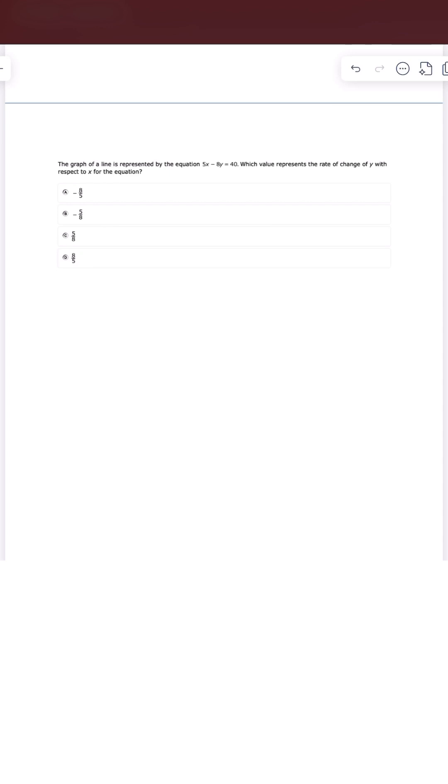This is number seven from the 2024 Algebra 1 EOC. The graph of a line is represented by the equation 5x minus 8y is equal to 40, which value represents the rate of change of y with respect to x for the equation.